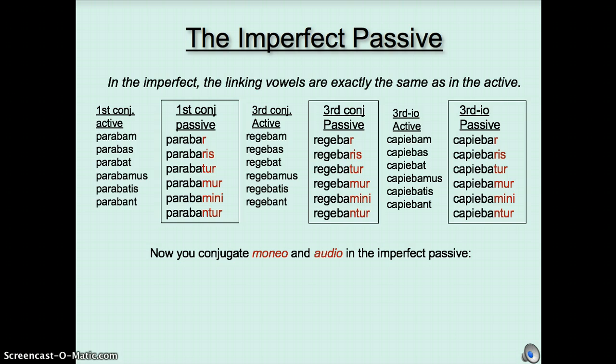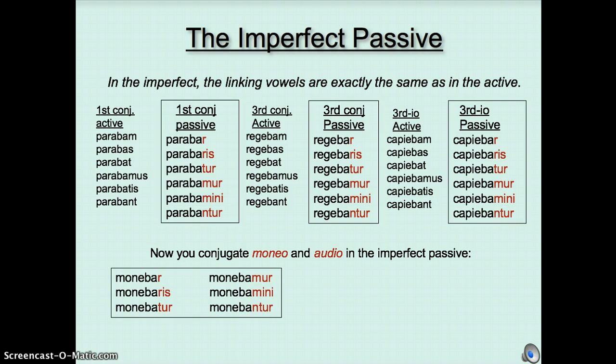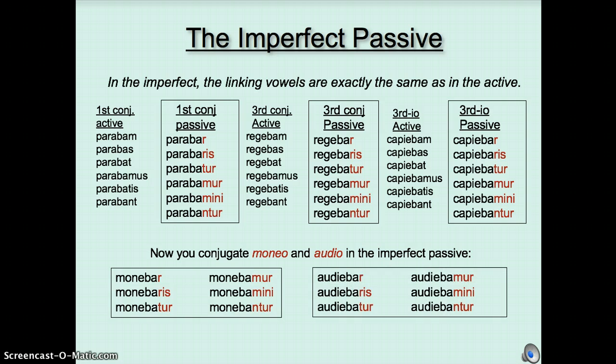Now you do moneo and audio. Remember, there's nothing funny about the linking vowels here. I'm going to show you moneo now, so stop the video if you need more time. That's monebar, monebaris, monebatur, monebamur, monebamini, monebantur. And now let's take a look at audio. Audiebar, audiebaris, audiebatur, audiebamur, audiebamini, audiebantur.